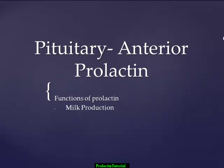Welcome to another tutorial on the anterior pituitary. In this tutorial we'll be discussing the production of prolactin, which functions to produce milk in the mammary tissues. We'll look at a flow diagram to consider how the hypothalamus, pituitary, and mammary tissues respond to prolactin, the effects of prolactin on the ovary as it relates to the female system, whether prolactin is protein or lipid based, and the hypo and hyper secretions of prolactin.